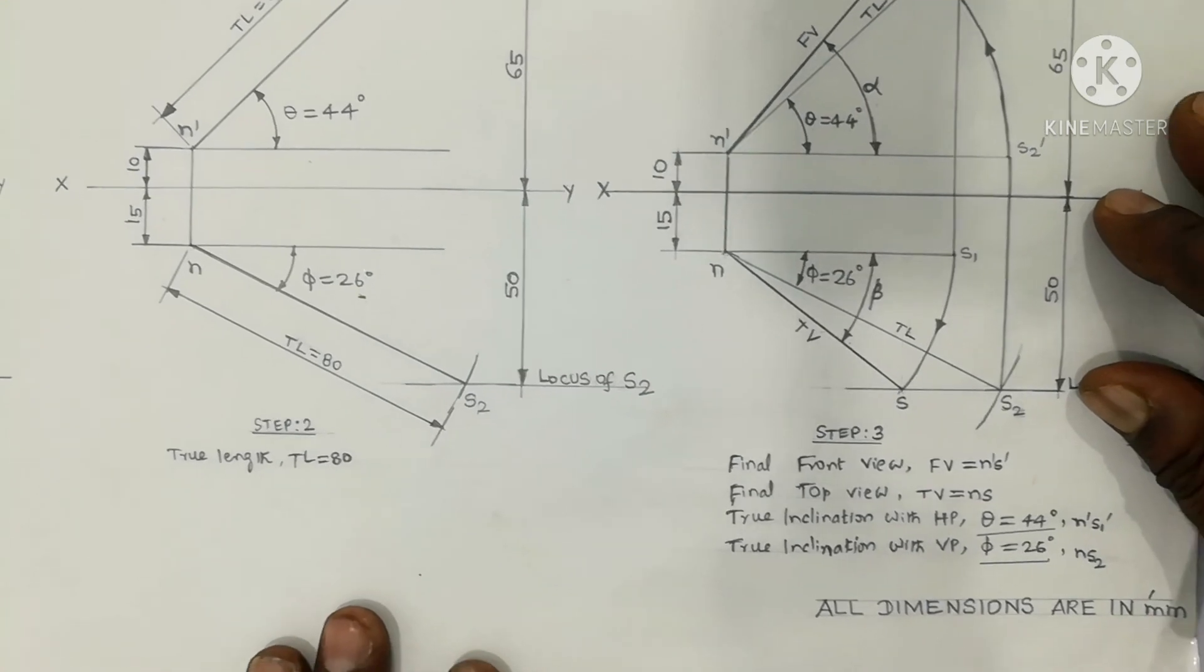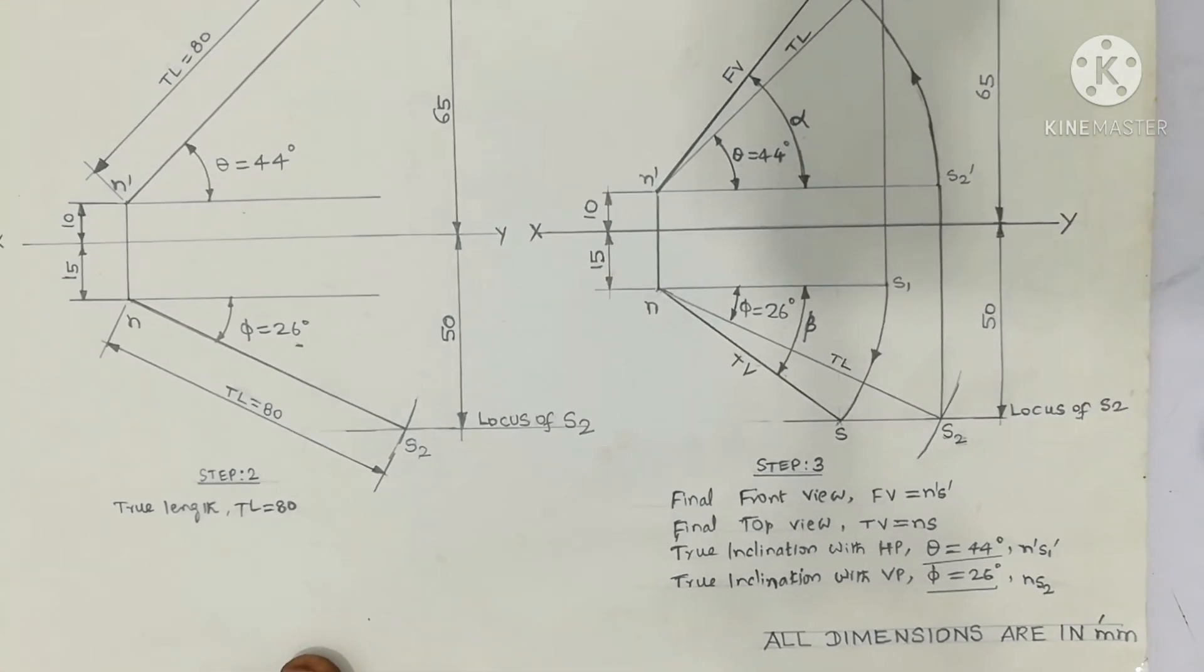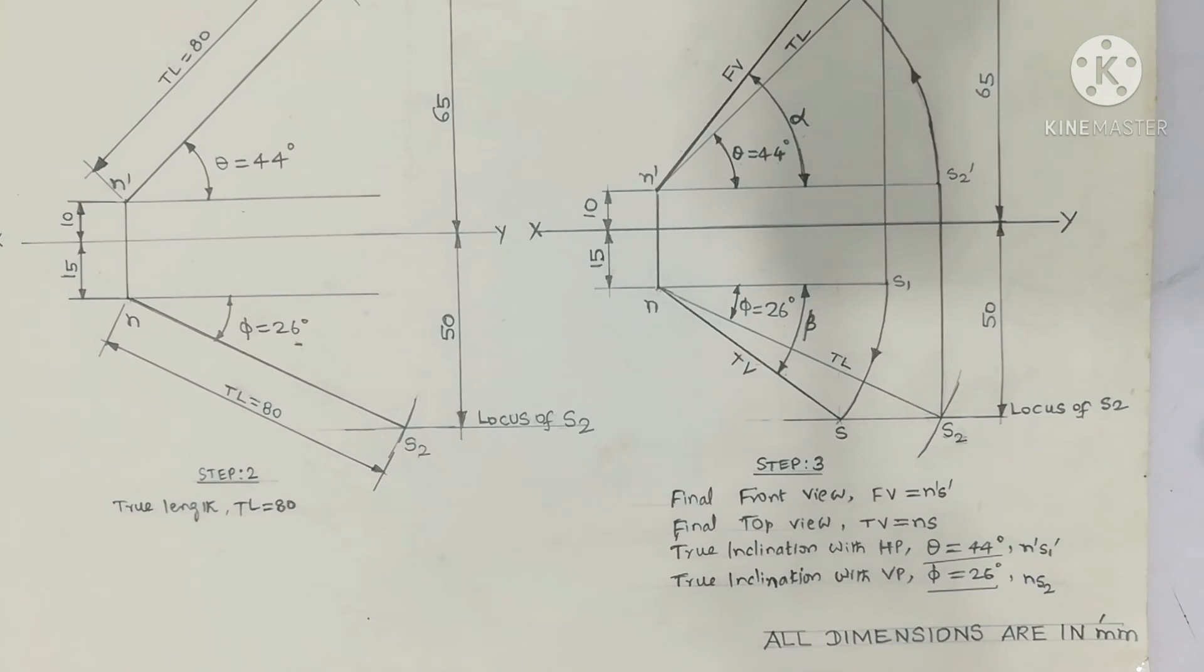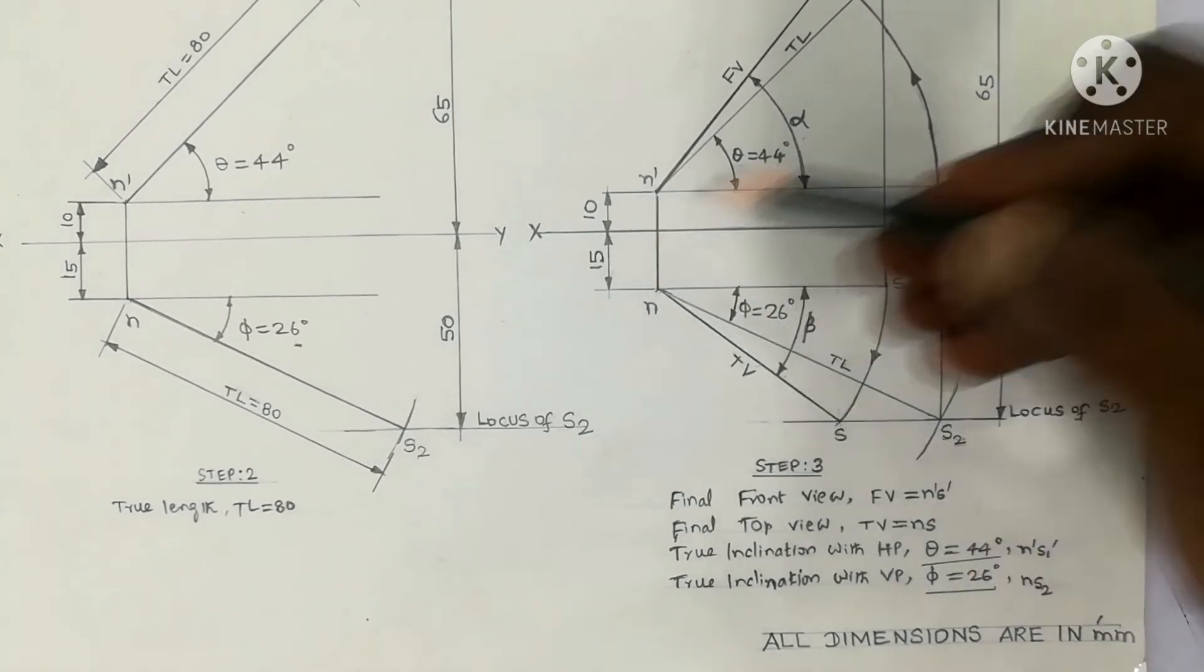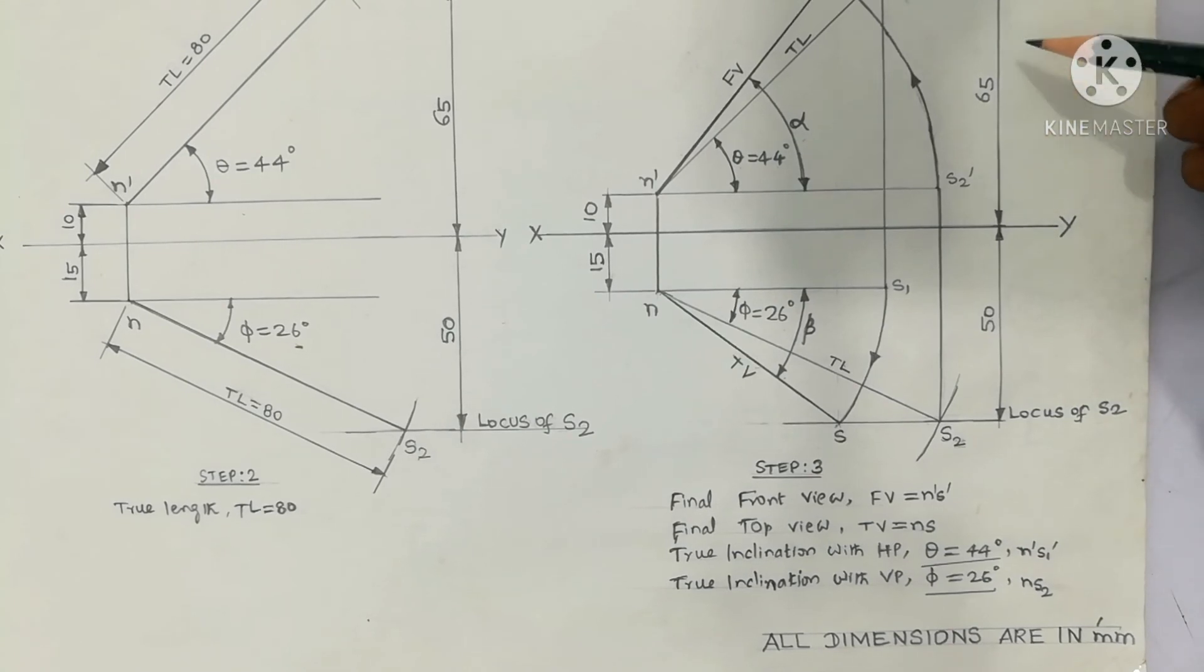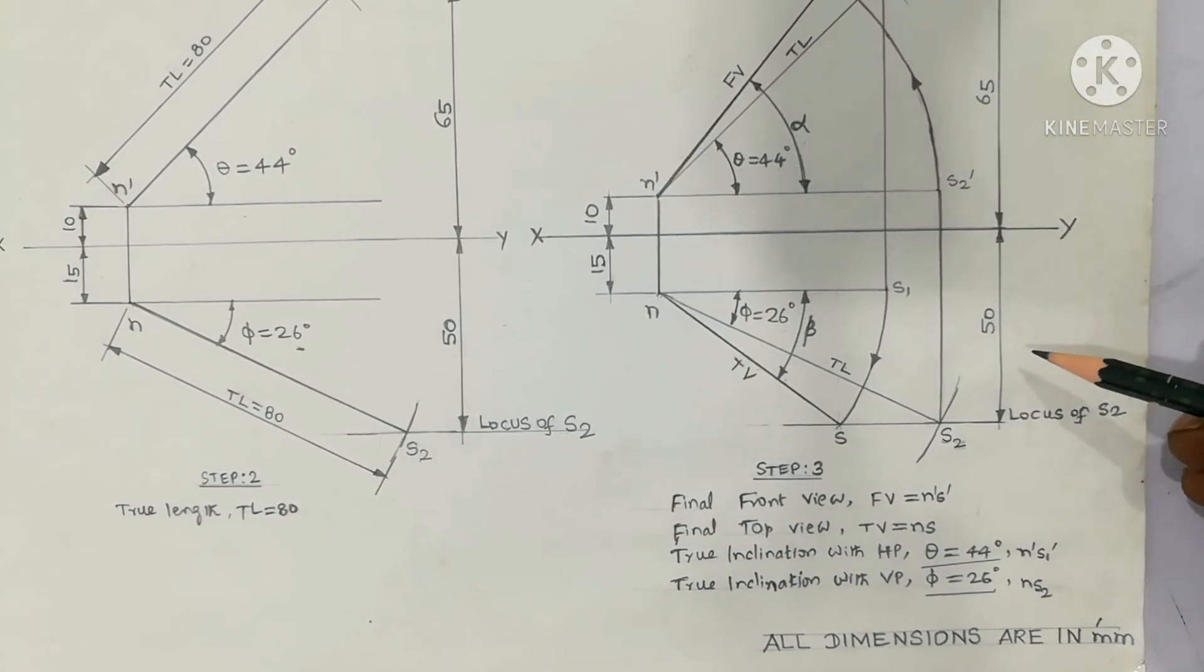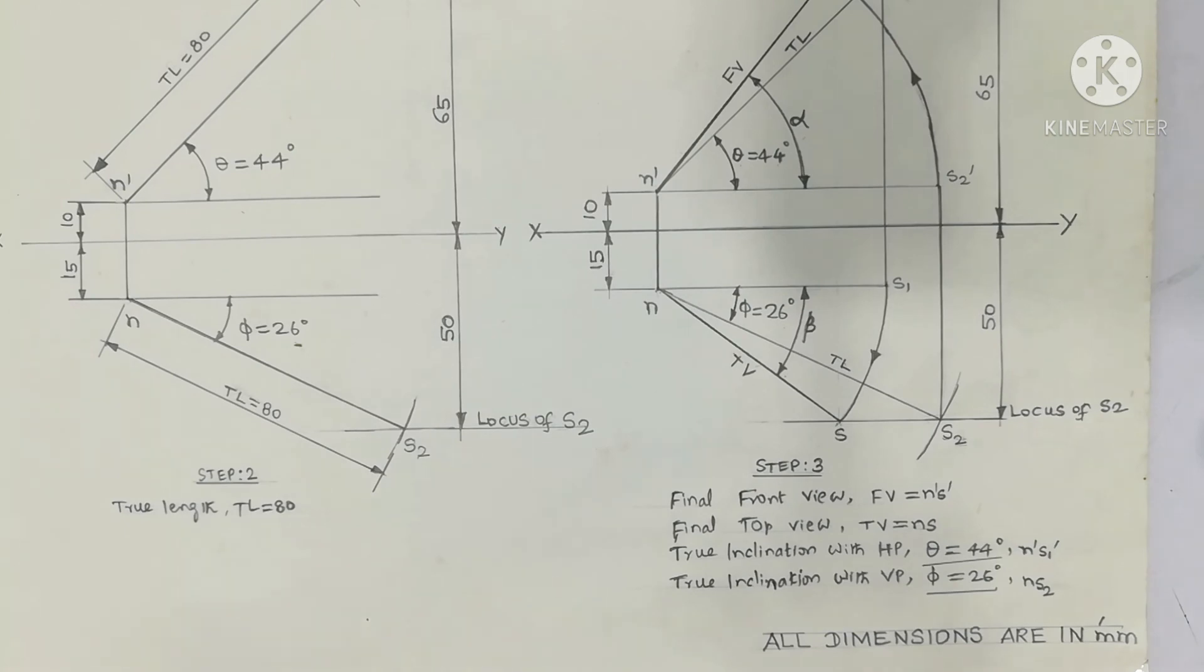The diagram appears like this when drawn on the drawing sheet. That is the purpose of this video. Below the diagram you can write all dimensions are in mm, because the 10, 15, 65mm above HP, 50mm in front of VP - the distance in mm will represent, that is millimeter as a unit followed.